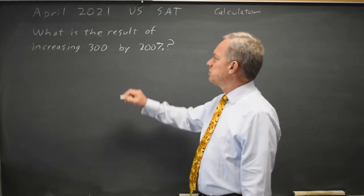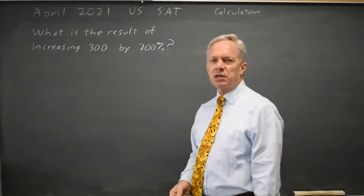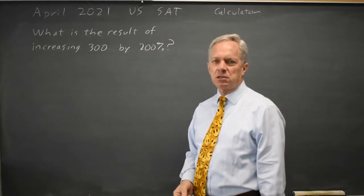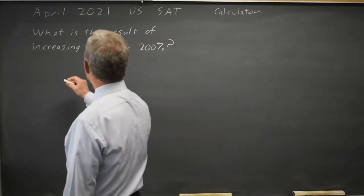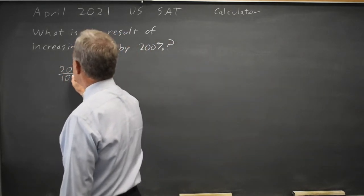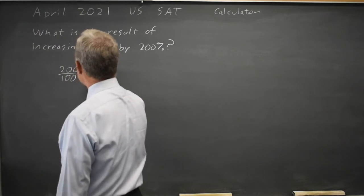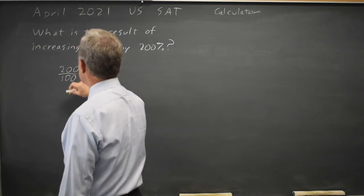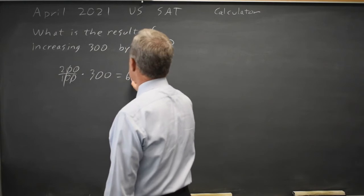The College Board is asking us to increase 300 by 200%. 200% of 300. 200% is 200 over 100. Of means times 300. So that's 2 times 300 equals 600.